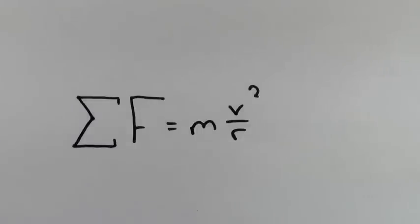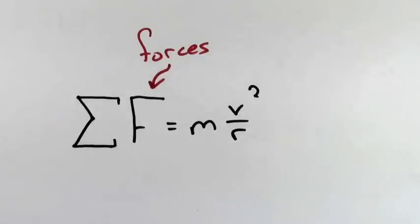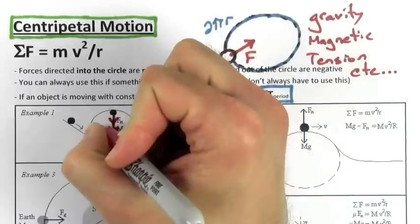When you're ready to use this formula, you do what you always do with sum of the forces. You plug the forces into the left hand side and you solve for whatever it is you're looking for. Some people have trouble determining whether the forces should be positive or negative. Forces directed into the circle are always considered positive, regardless of whether they're going up or down.